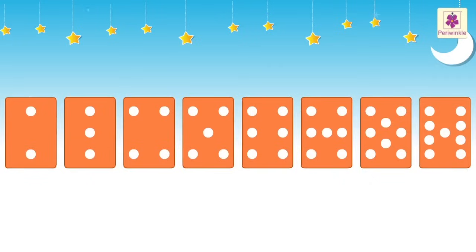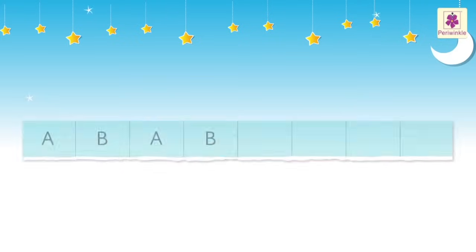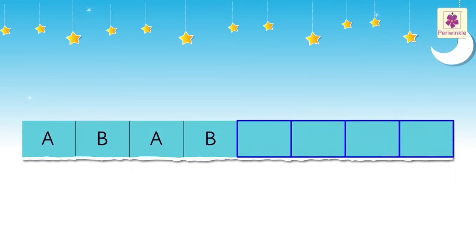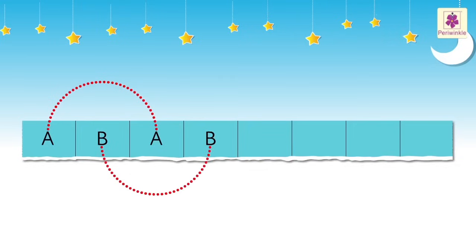Kids, isn't it interesting? We can find pattern in letters too. Now observe the given pattern and write the next four letters. We can see that letter A and letter B are placed alternatively. This becomes our pattern.